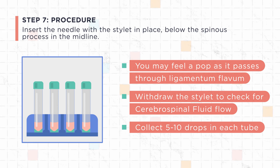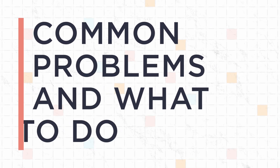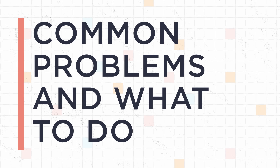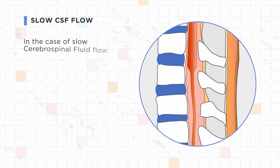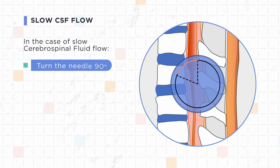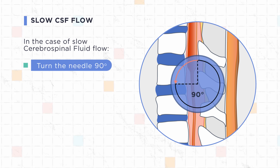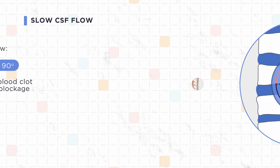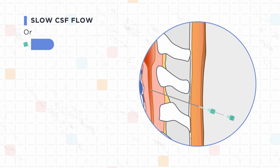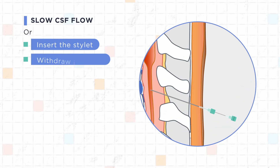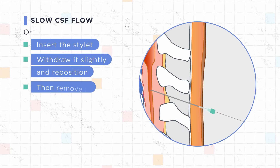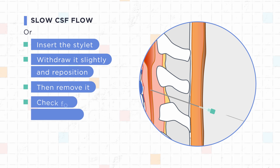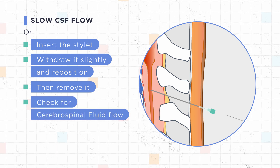Now let's address common problems and what to do when they occur. In the case of slow cerebrospinal fluid flow, turn the needle 90 degrees — a nerve root or blood clot may be causing blockage. You can also replace the stylet, withdraw the needle slightly, reposition, then remove the stylet and check for cerebrospinal fluid flow.